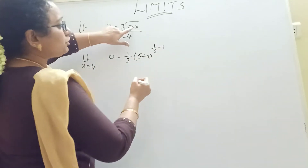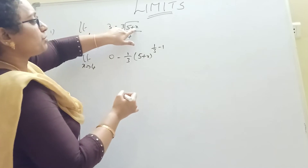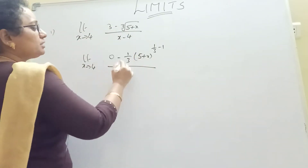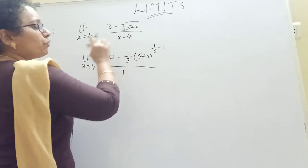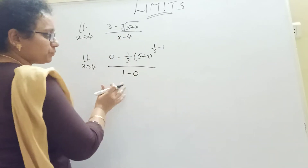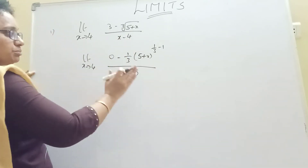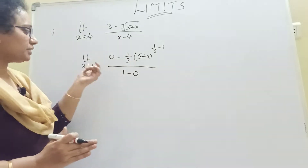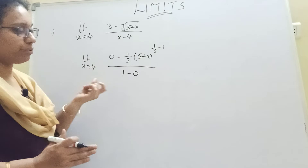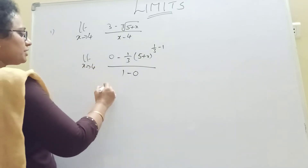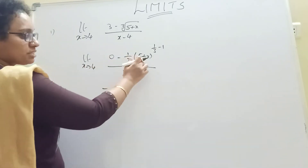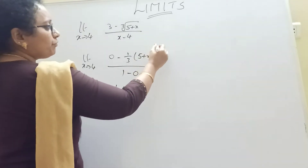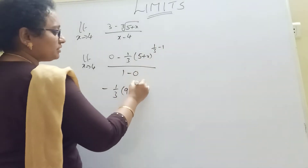Okay, my both derivatives: 5 derivative is 0. And x derivative is 1. But 0 is 1 minus 0, so x derivative is 1. And the power of 0 is 1 minus 0. The value will apply to 1 plus 0. Now if we take minus 1 by 3 — 4 plus 4 is 9 — 9 power gives us the value. 1 minus 3 is minus 2 by 3.